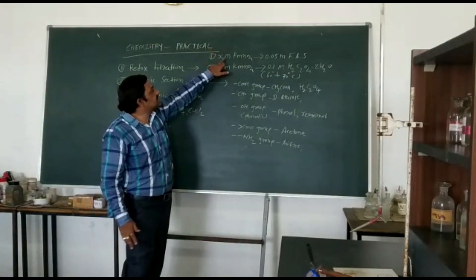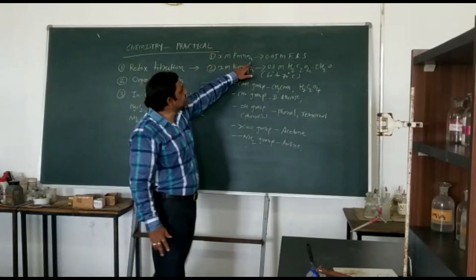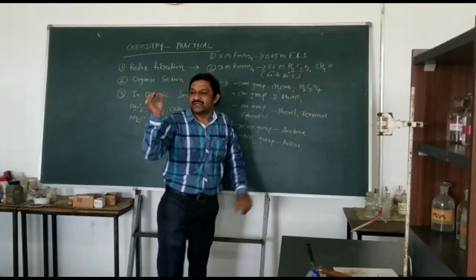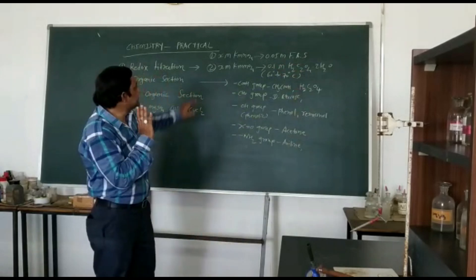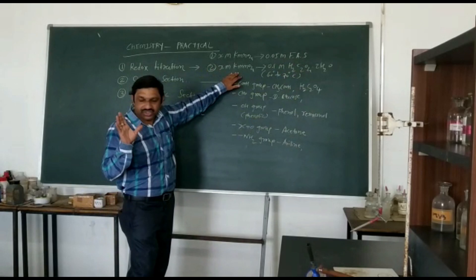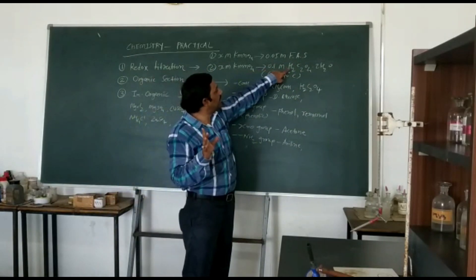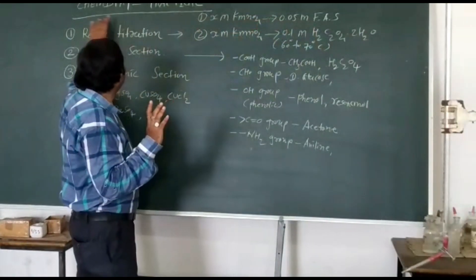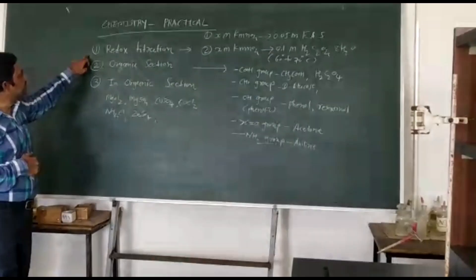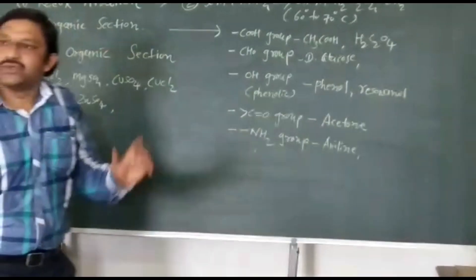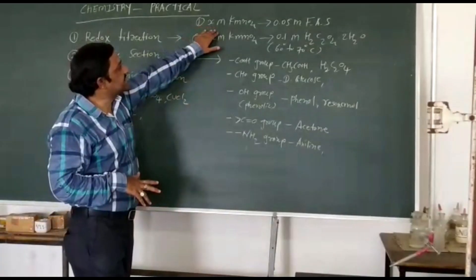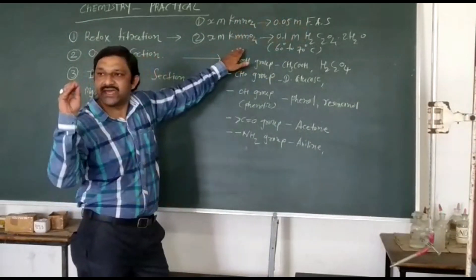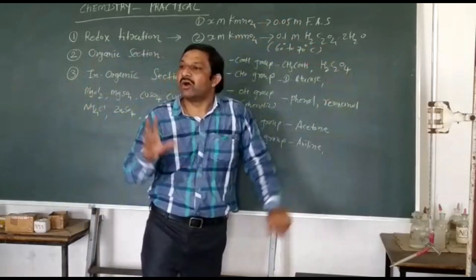First one is X molar KMnO4 versus 0.05 molar ferrous ammonium sulphate. This is your first practical. And second one is X molar KMnO4 solution versus 0.1 molar oxalic acid. So here are your two practicals of redox titration.